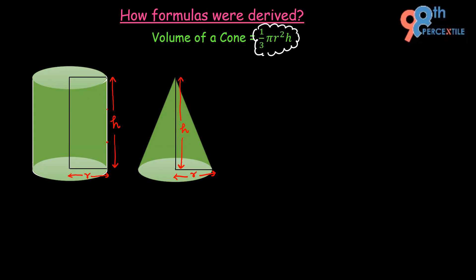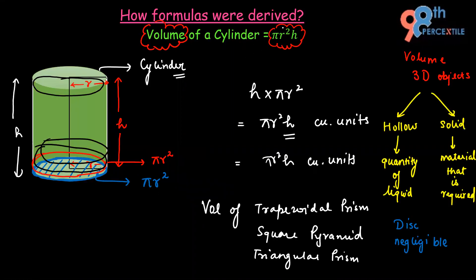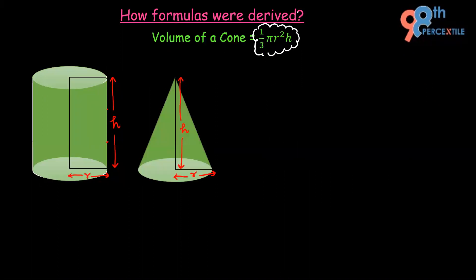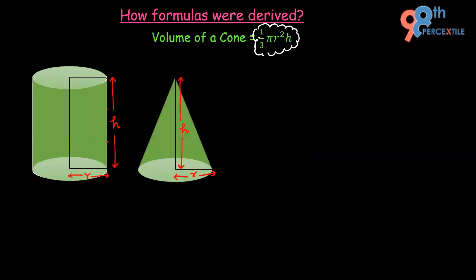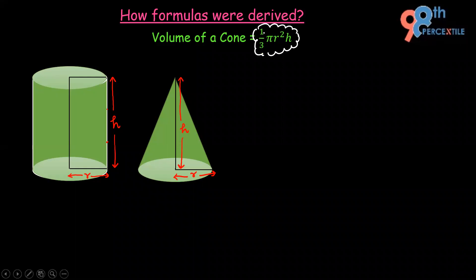If you haven't watched our previous video, I recommend you first watch it, where we discussed how the volume of a cylinder is π r² h, because this formula will be used here. As you can see, the volume of a cone is just one third of the volume of the cylinder — π r² h — with 1/3 multiplied in.